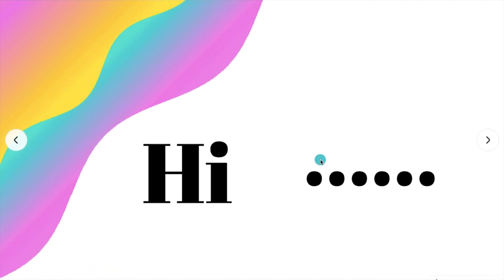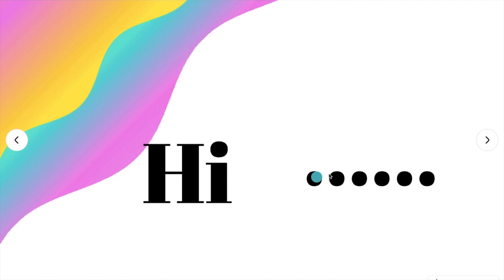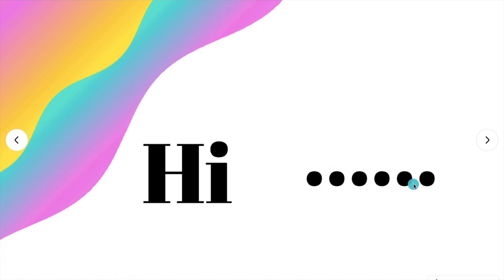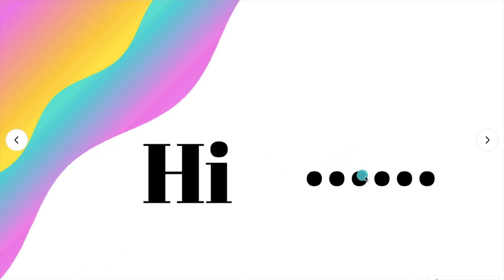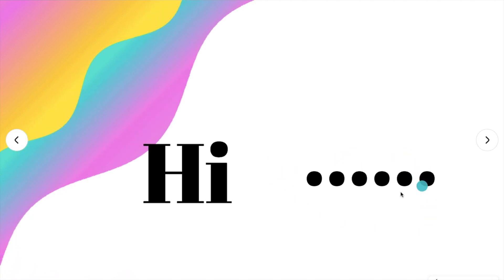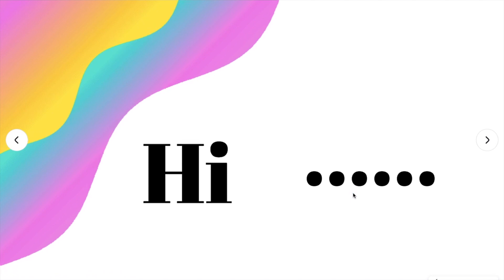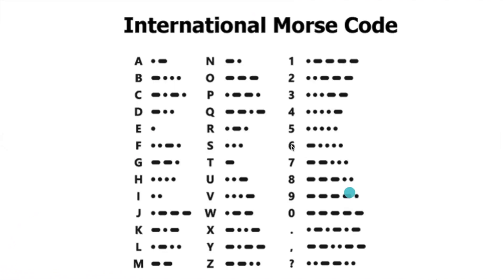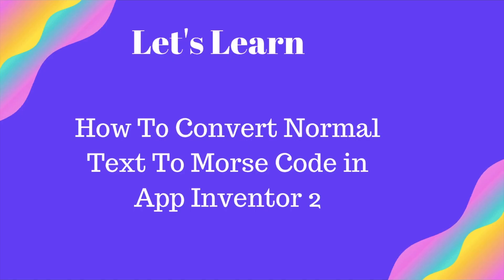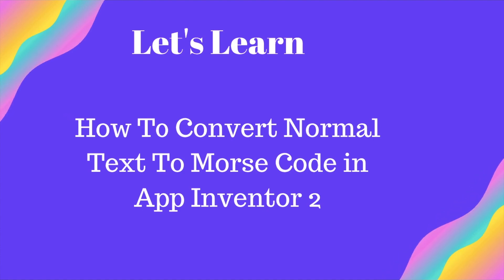For example, typing 'HI': H is represented by four dots, and I is two dots. You can look up the full international Morse code alphabet — A through Z and numbers 0 through 9 — by searching on Google. Now let's create an app to convert normal text to Morse code.